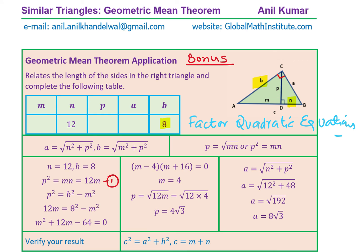We can also write P squared equals B squared minus M squared, since B is the hypotenuse of the smaller triangle on the left side. This gives a second equation. Substituting equation two into equation one: 12M equals B squared minus M squared. With B equals 8, that is 12M equals 64 minus M squared. Bringing all terms to the left: M squared plus 12M minus 64 equals 0. This is our quadratic equation.